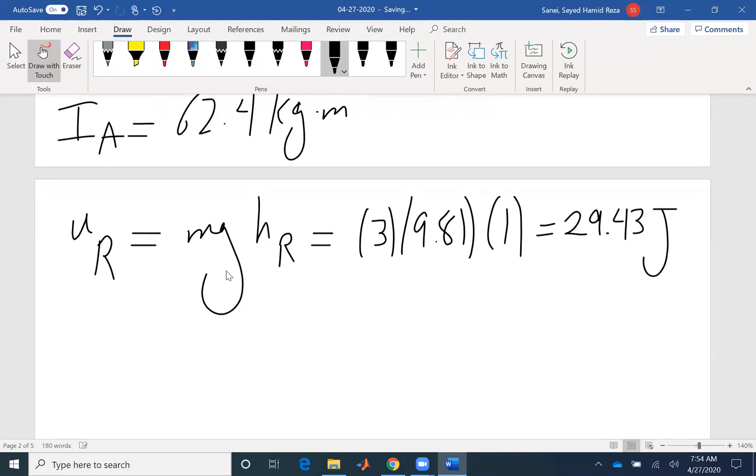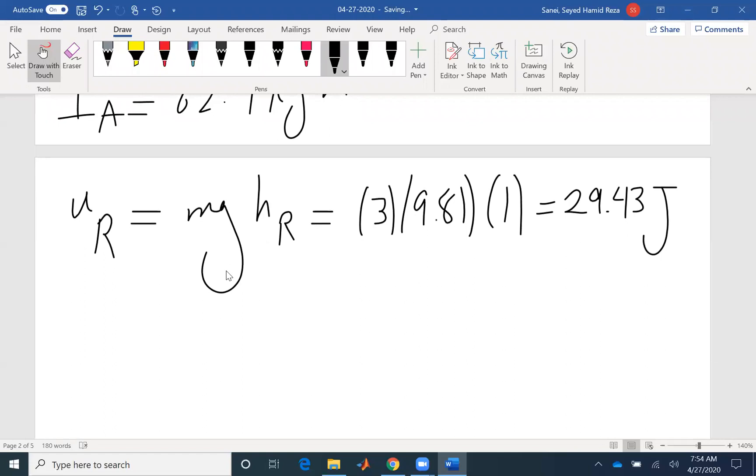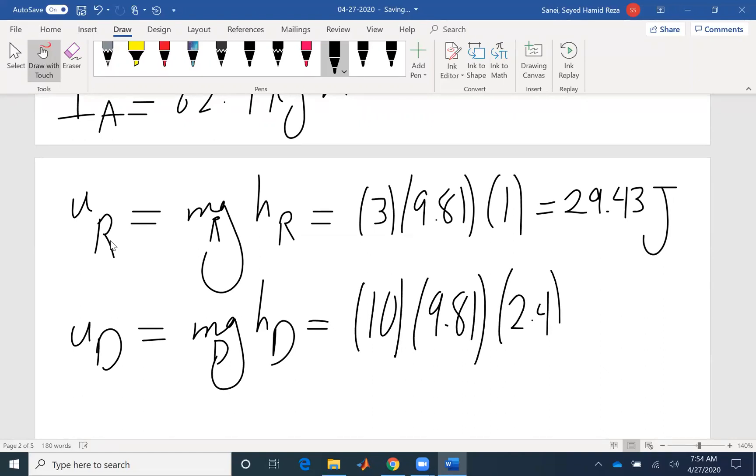The work done on the disk, similar: m g h of the disk. This is for rod, this is for disk. The mass is 10 times 9.81. The distance is the length plus the radius, so 2.4, equals 235.44 Joule. And now I can put everything together.